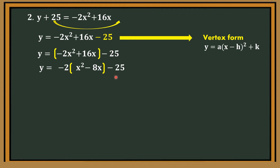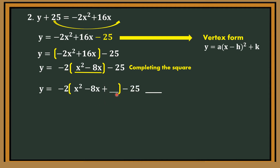Just copy minus 25. For x squared minus 8x, we apply completing the square to get a perfect square trinomial. There is a missing number. To get it, take the numerical coefficient of the middle term, that is negative 8. Divide by 2 — the answer is negative 4. Then square it — the answer is 16. Place plus 16 inside. We cannot just place minus 16 outside, because there is still a negative 2 factor. So we multiply the two: negative 2 times 16 equals negative 32. Take the opposite — that is positive 32.